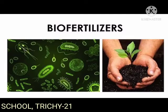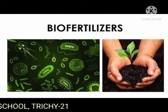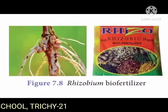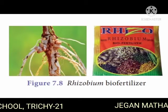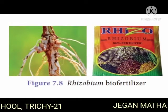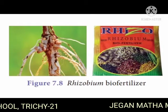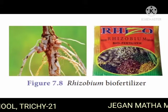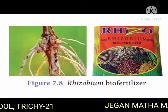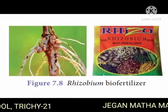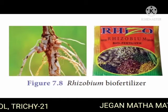Types of bio fertilizers: Rhizobium is a soil bacteria that colonizes the roots of leguminous plants to form root nodules. The bacteria in the area fix atmospheric nitrogen and convert it to ammonia.